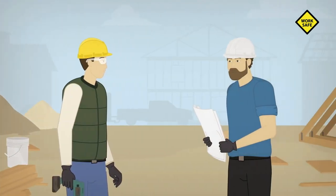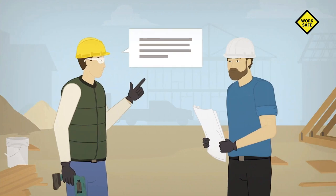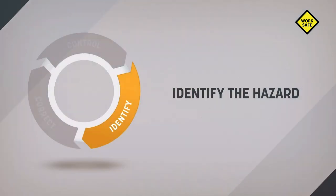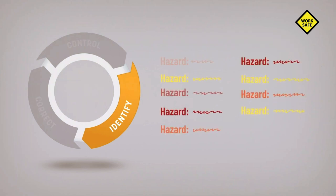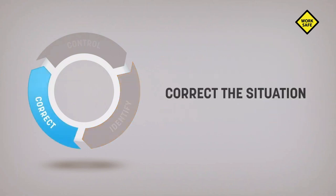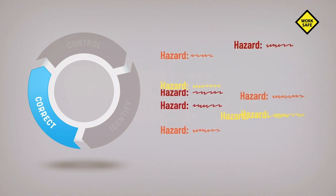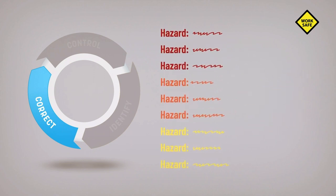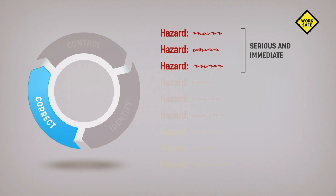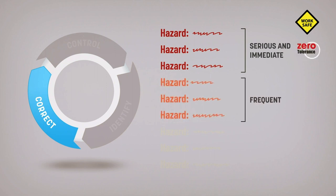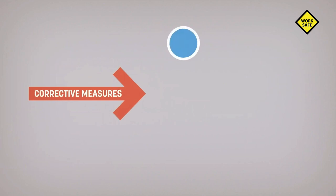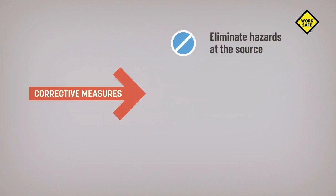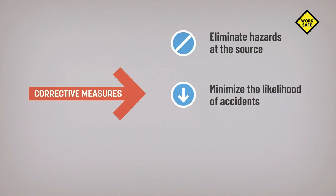Once you've identified the workplace hazards, it's time to take action and correct the situation. Start with the hazards that can have serious and immediate consequences on your workers, such as those considered zero tolerance. Then correct the most frequent hazards, and finally all other hazards.